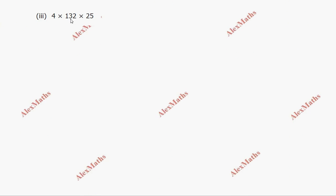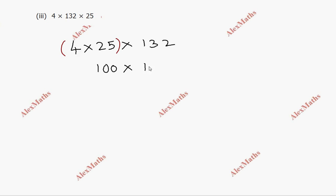Subdivision 3: 4 into 32 into 25. We rearrange the multiplication order using commutative property: calculate 4 into 25 first, which equals 100. Then 100 into 32 — 132 with 2 zeros — gives 13,200. That is the answer.